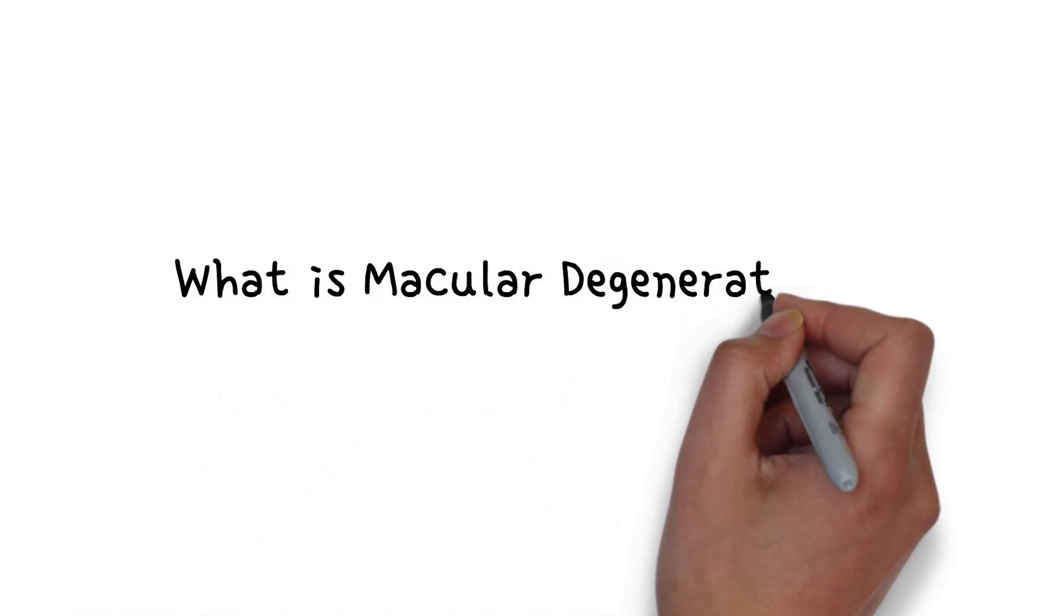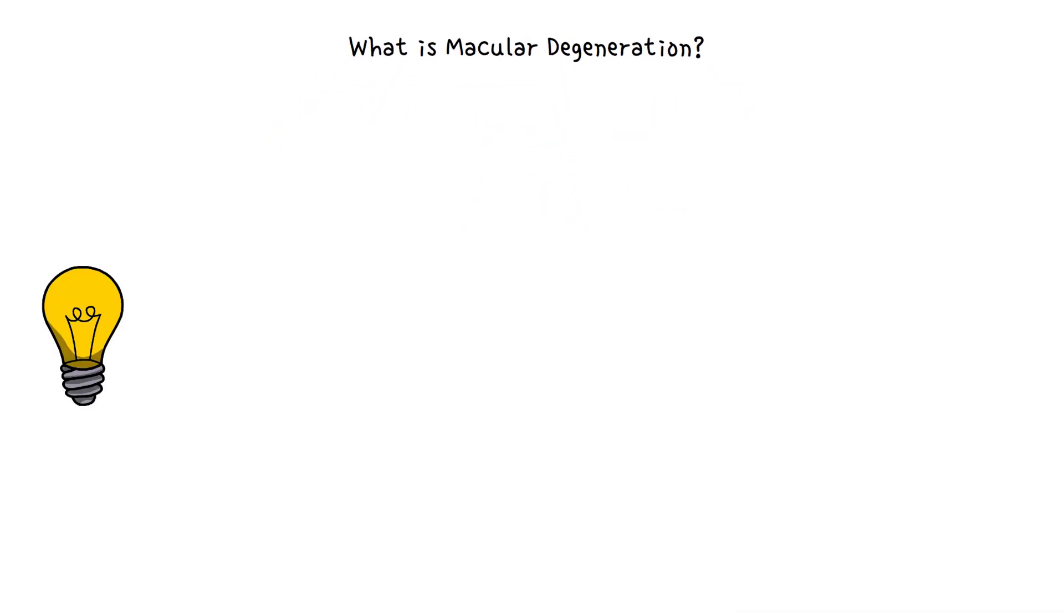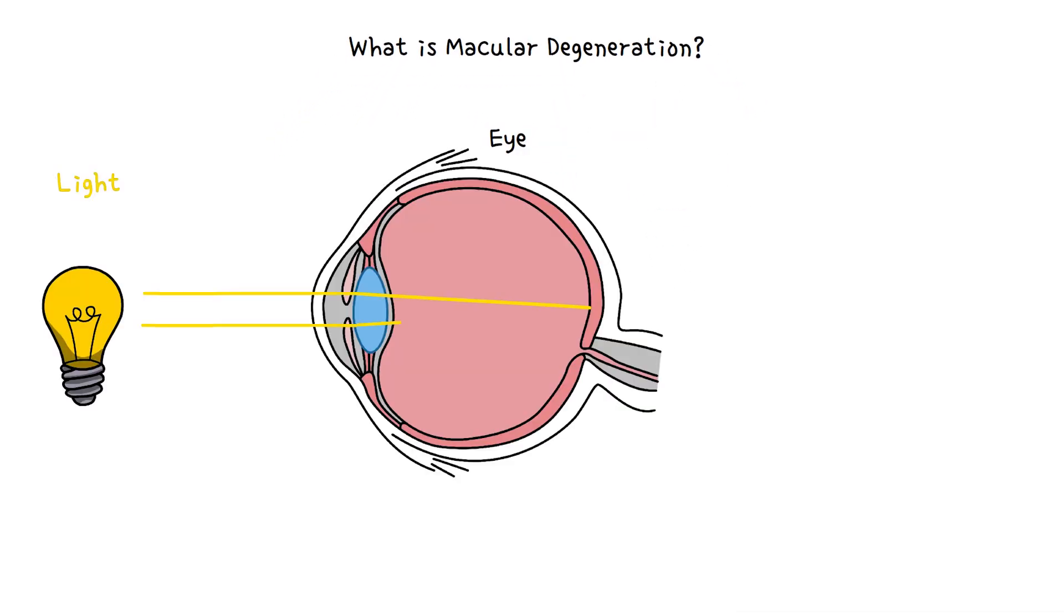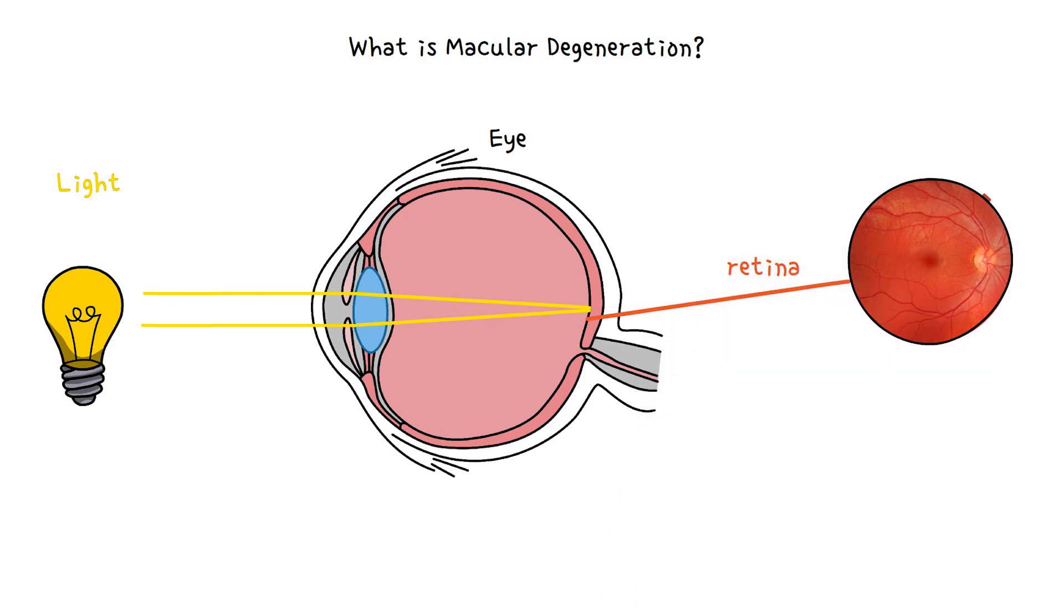Do you want to know what macular degeneration is? Let's begin. Macular degeneration, or age-related macular degeneration, is a problem with your retina. It happens when a part of the retina called the macula is damaged, which may result in blurred or no vision in the center of the visual field.